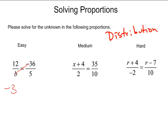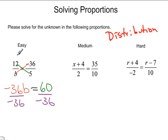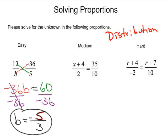We're going to cross-multiply: negative 36b equals 12 times 5, which is 60. There's only one more step in this problem, which is divide by negative 36, making 1b — written just as b on the left side. The answer is going to be negative, and 36 does not go into 60 evenly, so we put our brain in fraction mode. We see that 12 goes into both 60 and 36: 12 goes into 60 five times, and 12 goes into 36 three times, making the answer b equals negative 5/3.